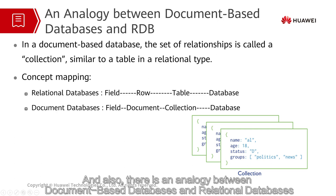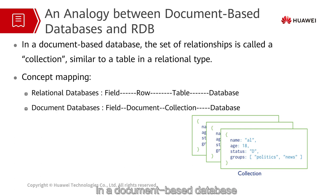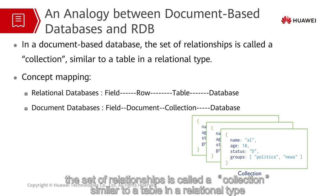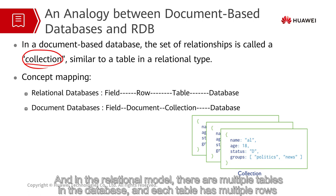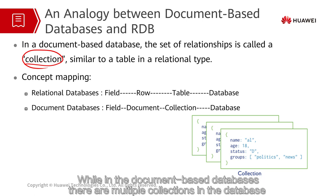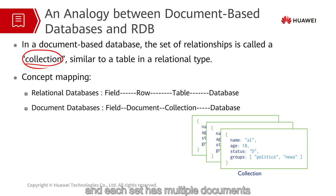There is an analogy between document-based databases and relational databases. In a document-based database, a set of relationships is called a collection, similar to a table in a relational type. In the relational model, there are multiple tables in the database and each table has multiple rows. While in the document-based databases, there are multiple collections in the database and each collection has multiple documents.